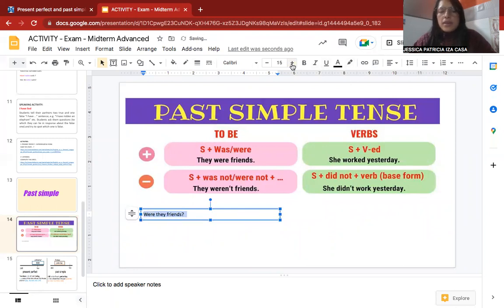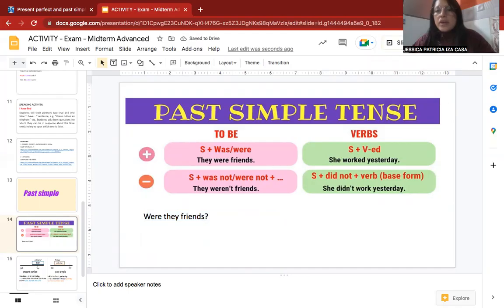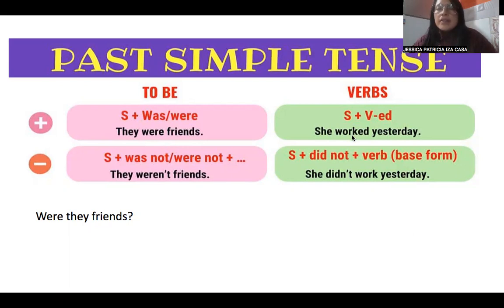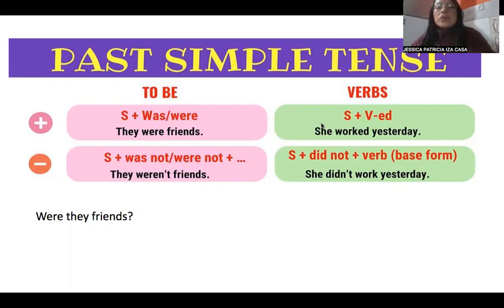If you don't use the verb 'to be,' it is a little different. For example: 'She worked yesterday.' This is a regular verb — you can recognize it because the verb has '-ed' at the end in the past. To change to negative, you use the auxiliary of the past simple: 'did.' So: 'She did not work yesterday' — and remember the verb goes back to its base form.